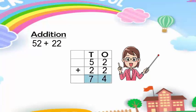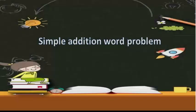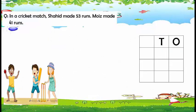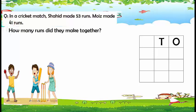Now we are going to solve a simple addition word problem. In a cricket match, Shahid made 53 runs and Moise made 41 runs. How many runs did they make together?